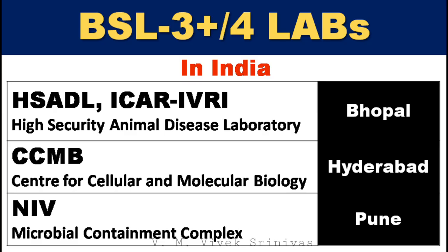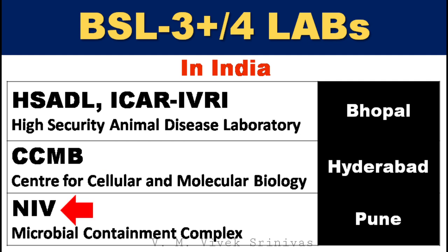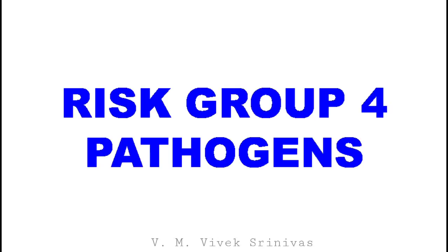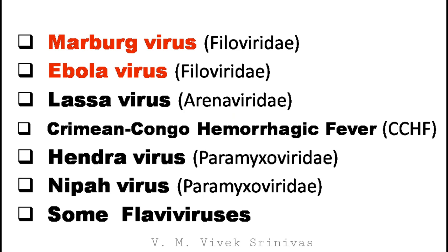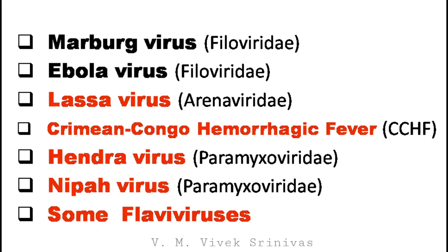Some of the BSL3-plus or BSL4 laboratories in India for handling these types of high-risk pathogens are: the High Security Animal Disease Laboratory run by IVRI at Bhopal; the Centre for Cellular and Molecular Biology at Hyderabad; and the Microbial Containment Complex run by the National Institute of Virology at Pune. BSL3-plus means a BSL3 lab with some facilities of BSL4. Other risk group 4 pathogens apart from Marburg and Ebola are Lassa virus, Crimean-Congo hemorrhagic fever virus, Hendra virus, Nipah virus, and some flaviviruses.